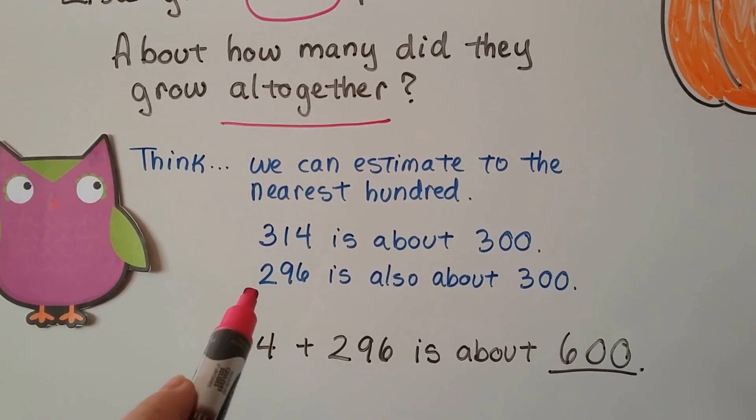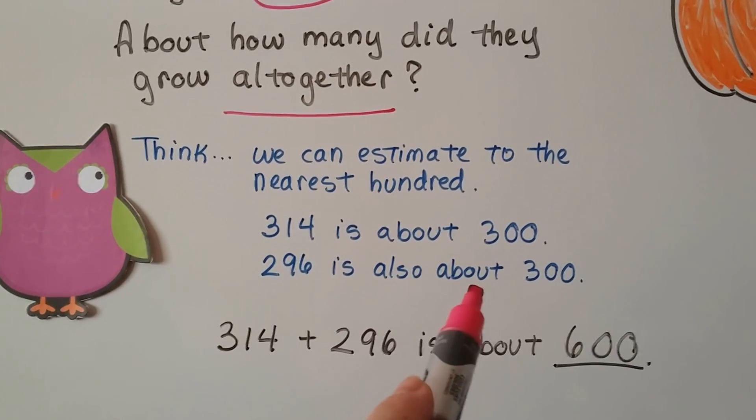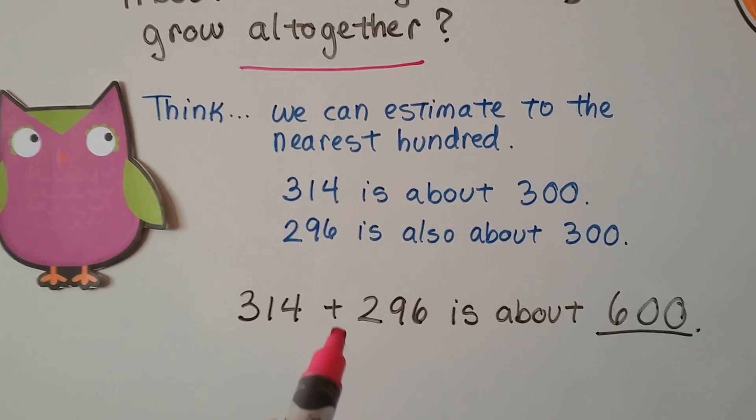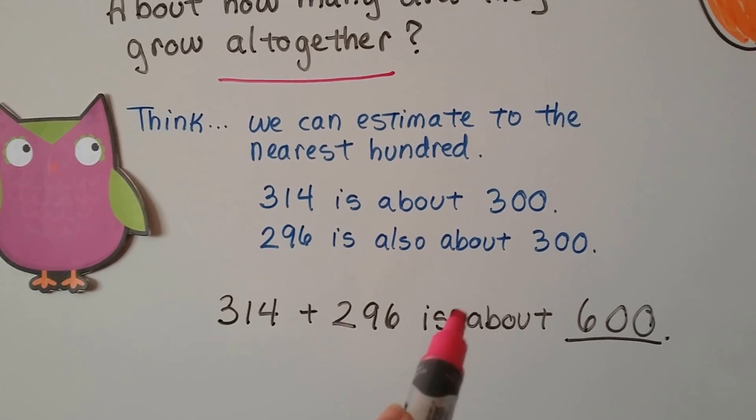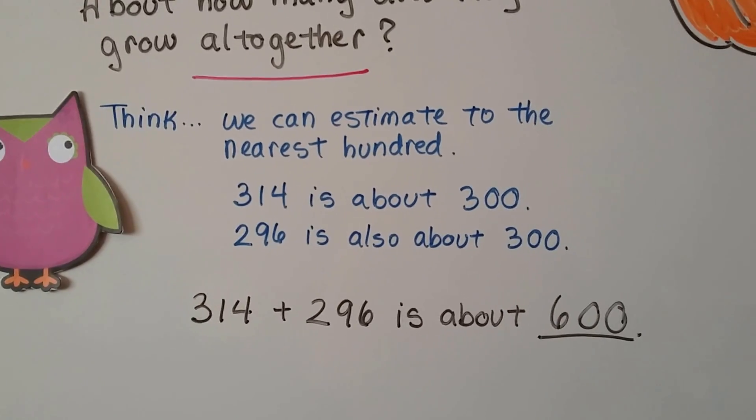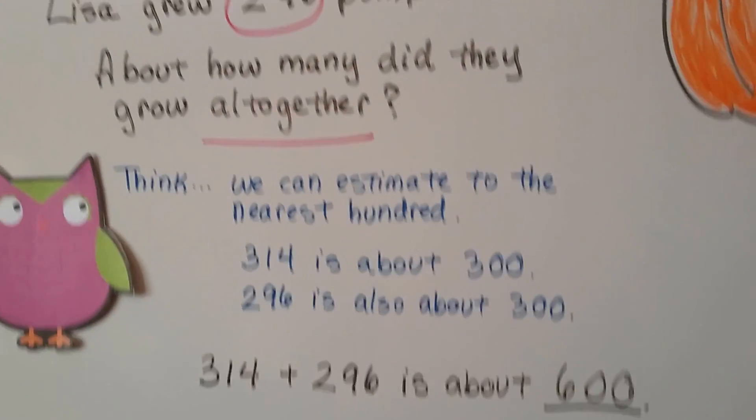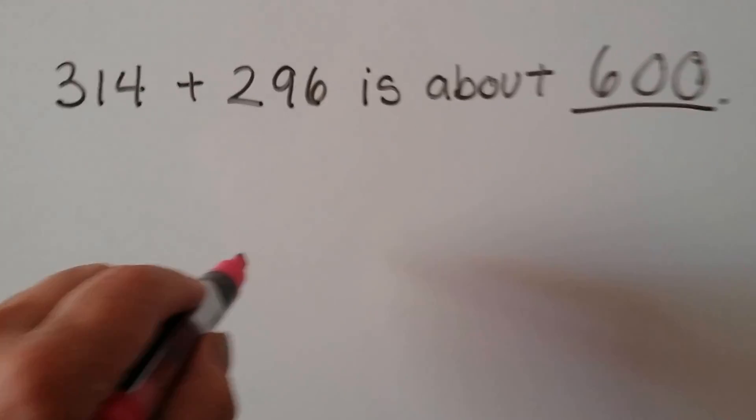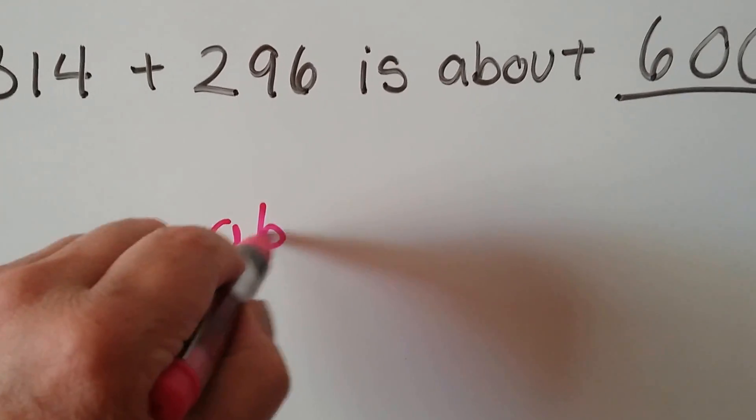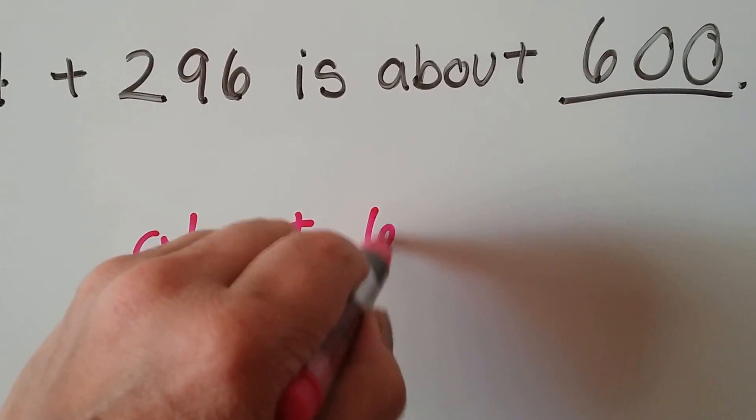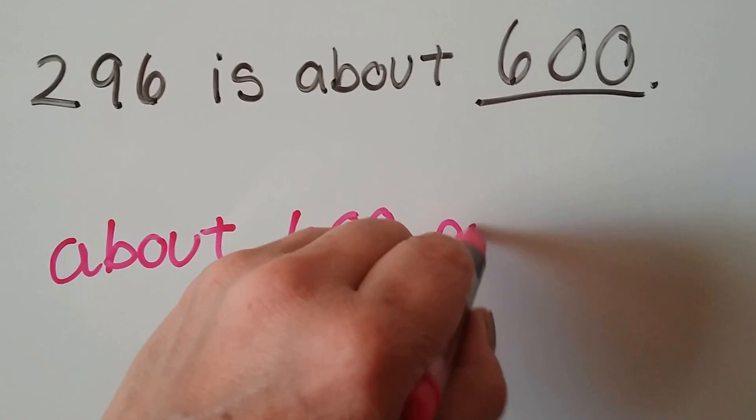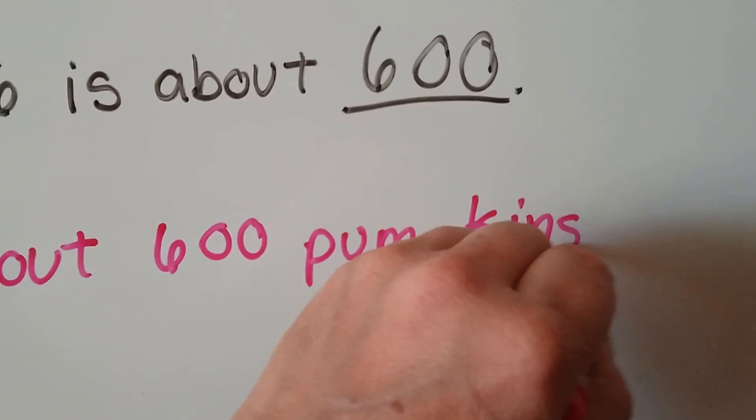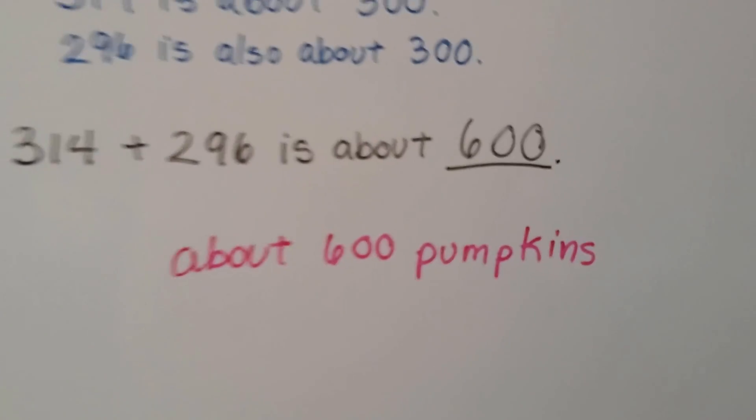So 314 plus 296 is about 600. The answer is about how many did they grow all together? About 600 pumpkins, because we need to label our answers. That's our answer.